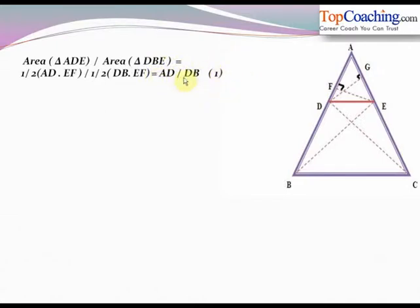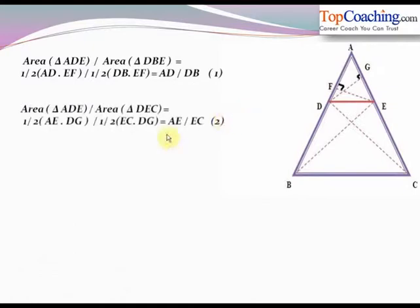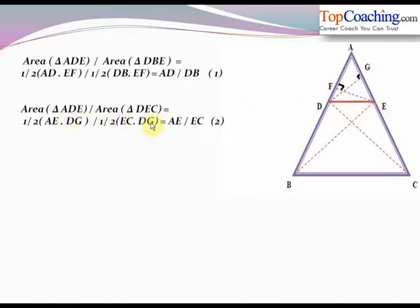Similarly, area of triangle ADE divided by area of triangle DEC equals (1/2) × AE × DG divided by (1/2) × EC × DG. DG and 1/2 cancel out, giving us AE/EC. Thus, area(ADE) / area(DEC) = AE/EC. Let this be equation 2.